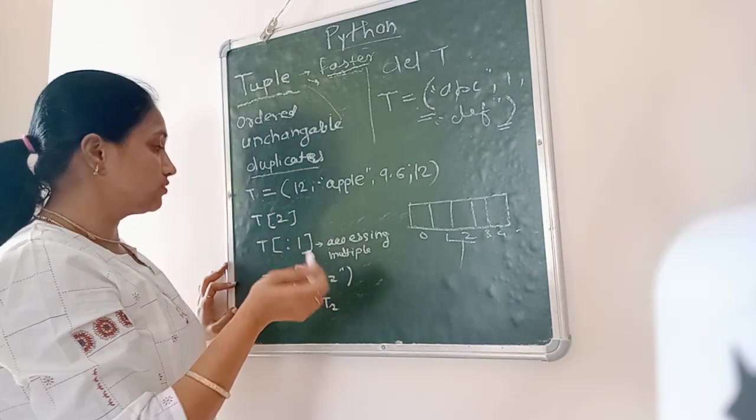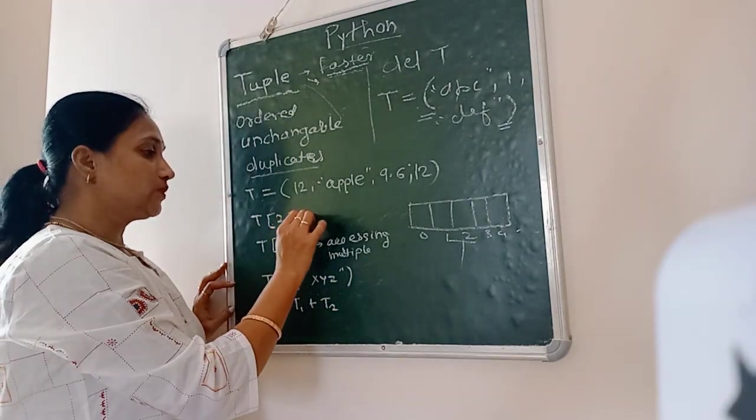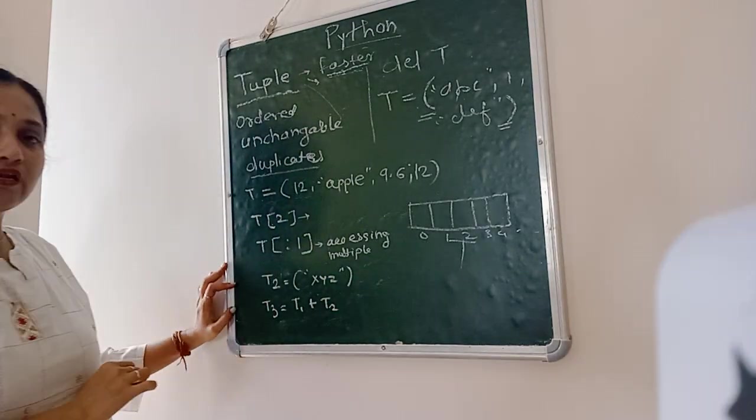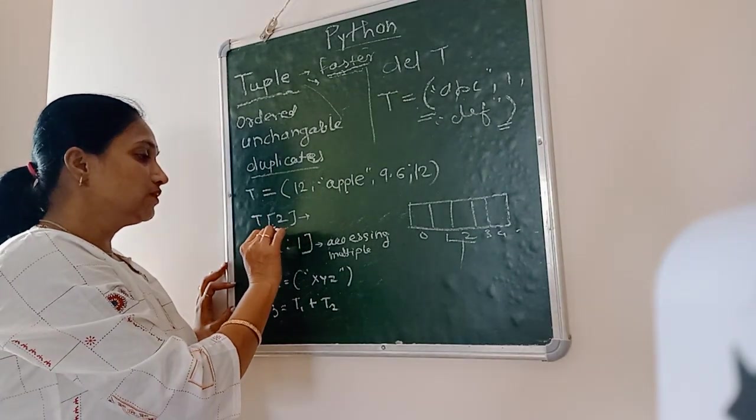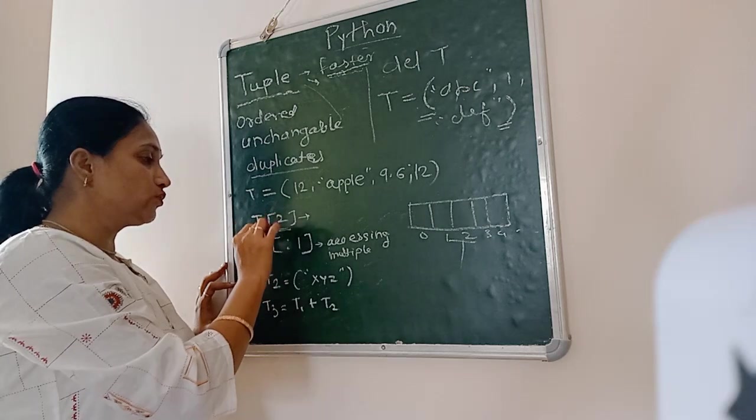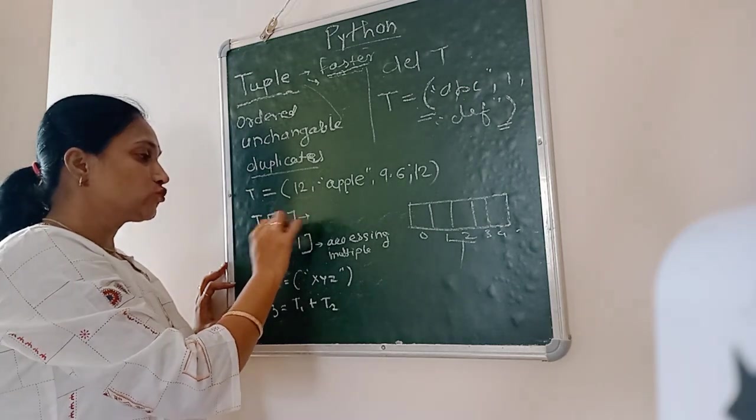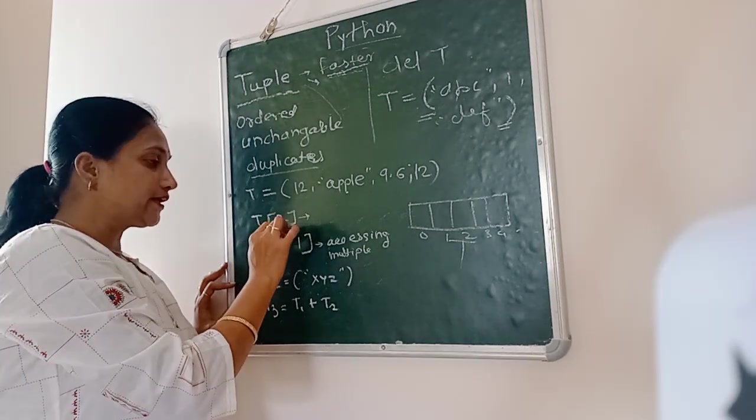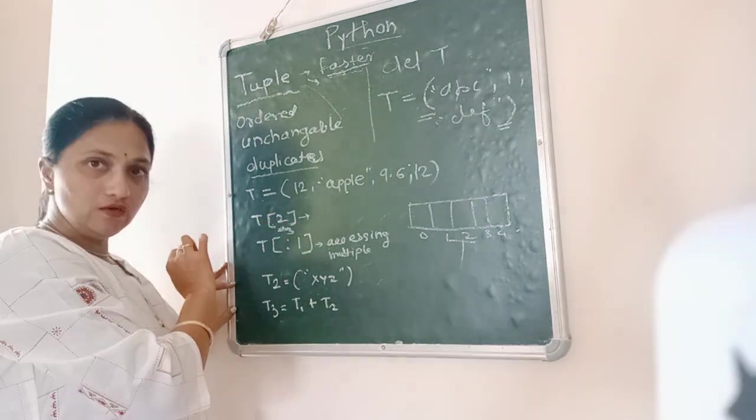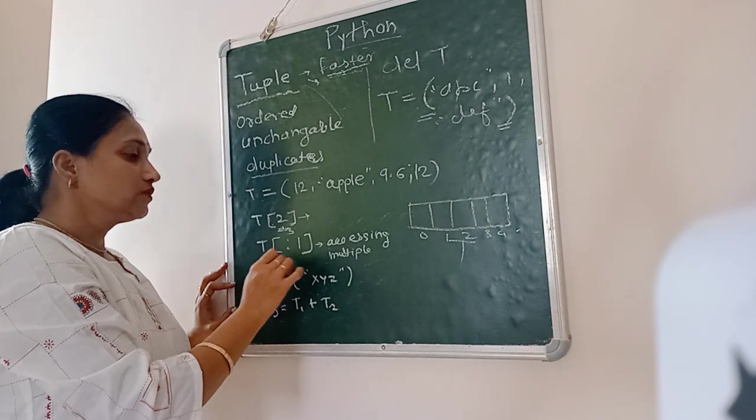Now next, if suppose you want to access the element at specific index or specific location, you have to simply mention the index number and here you have to use the square bracket. In that you have to mention the index. So index second means you are accessing the third element in the tuple.